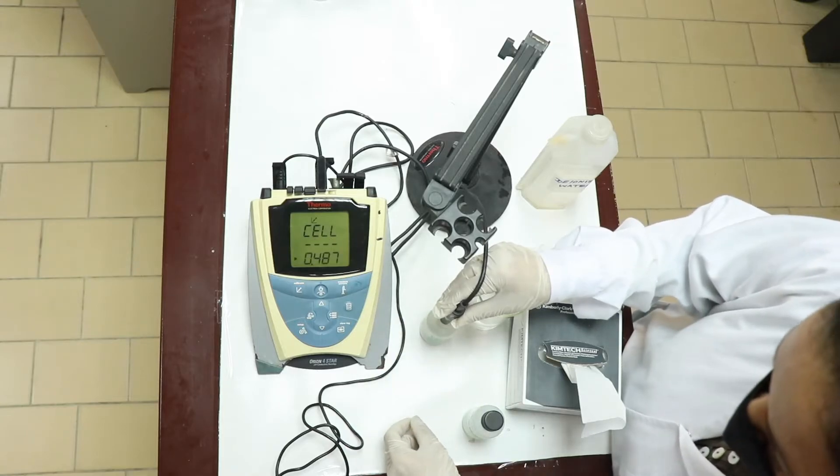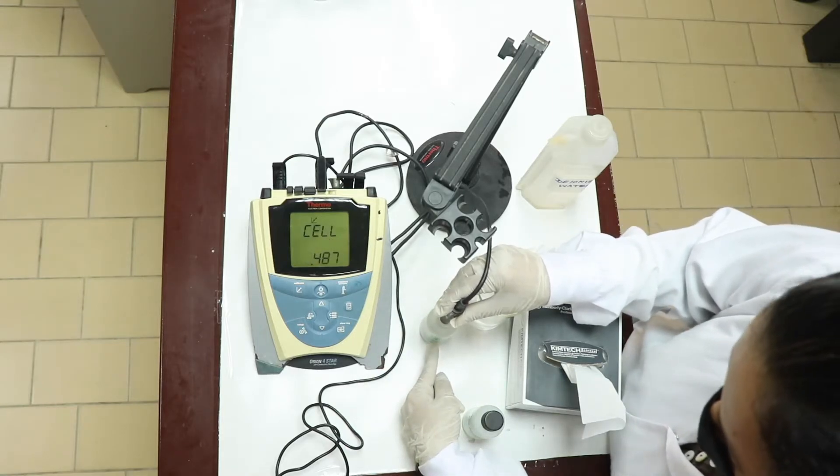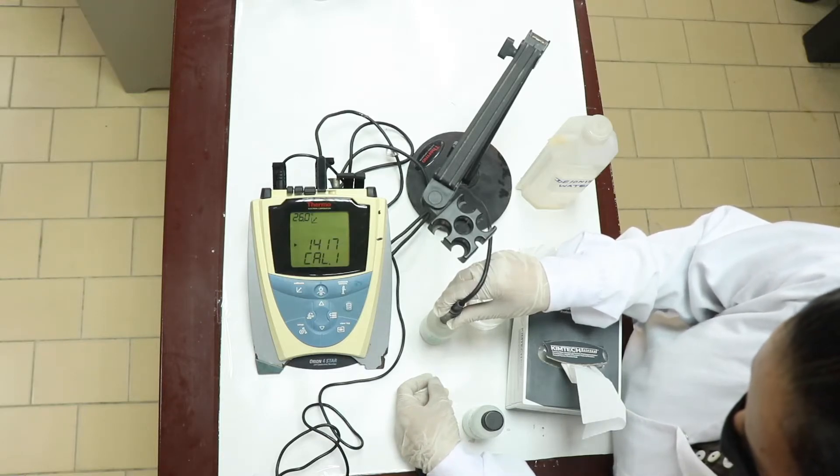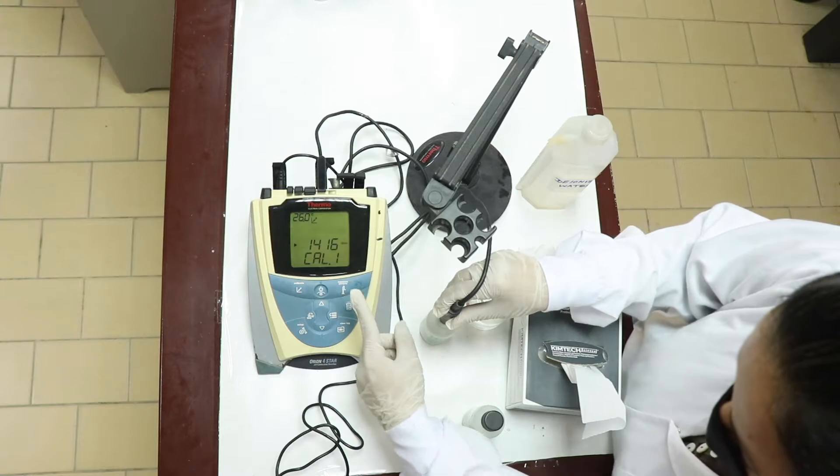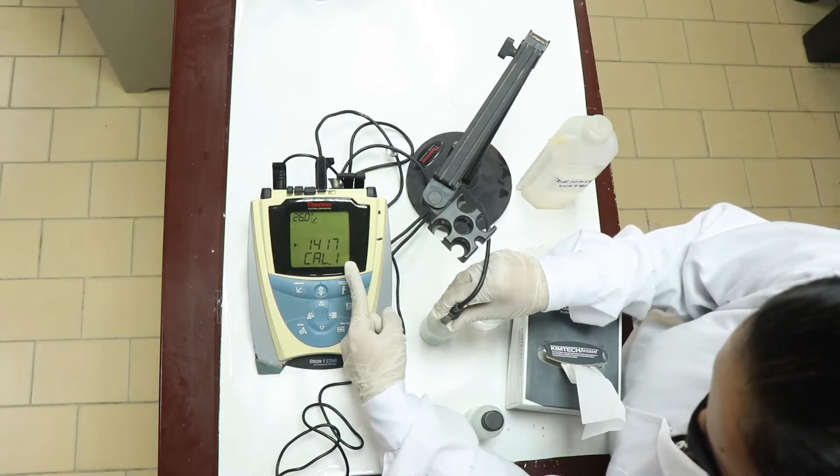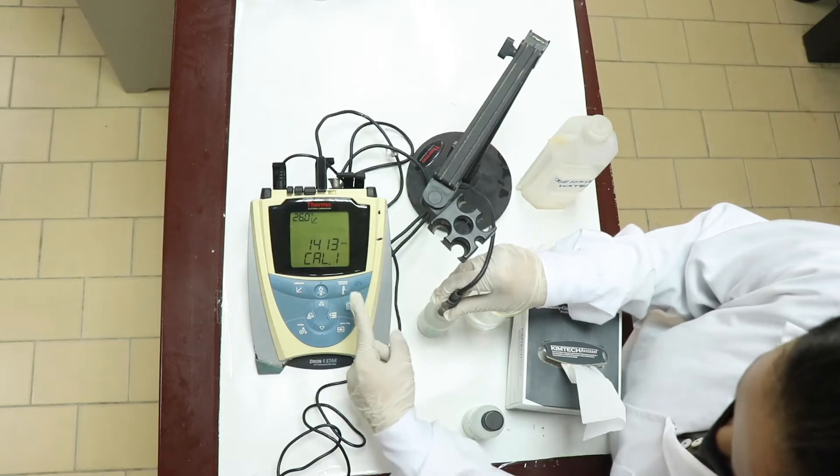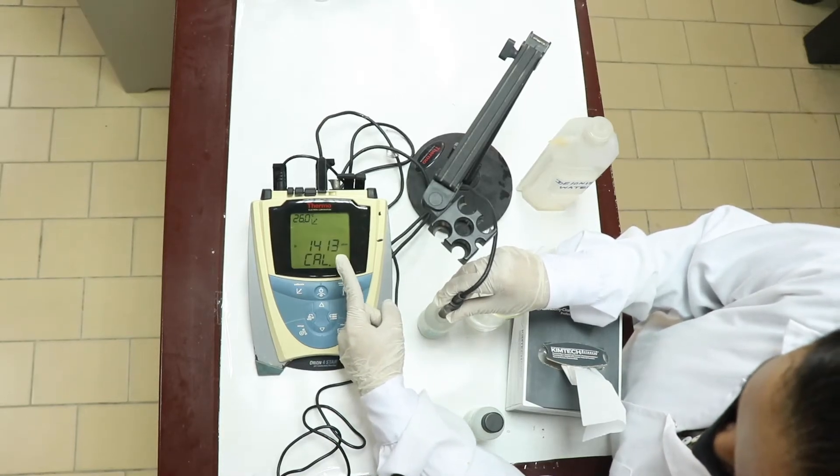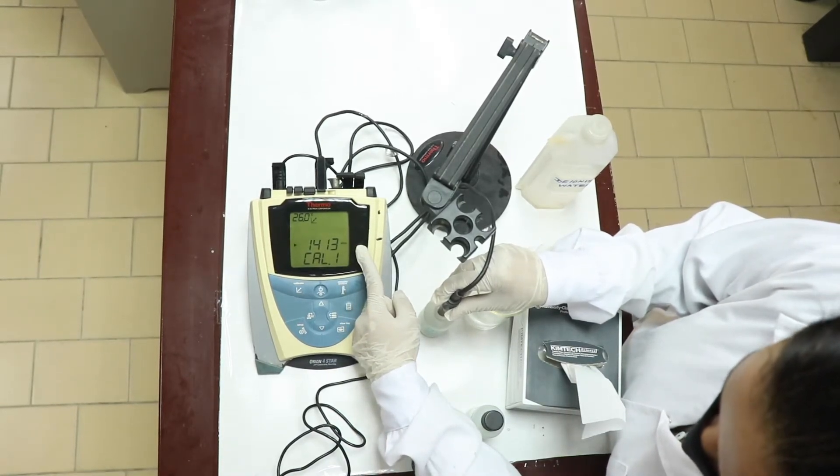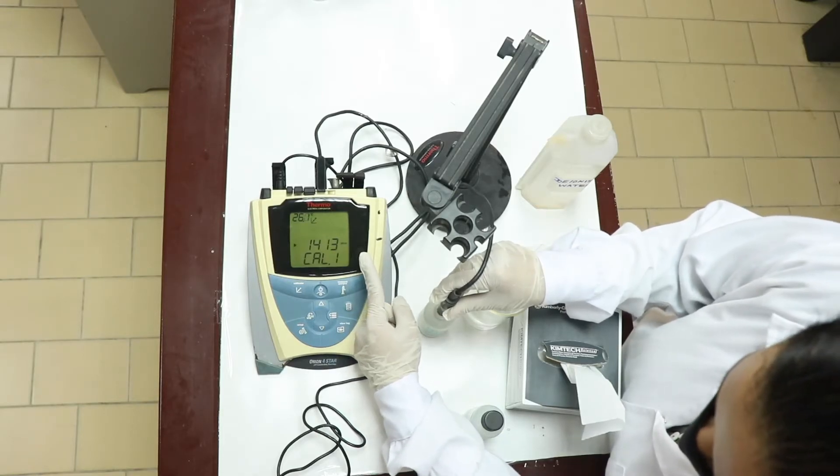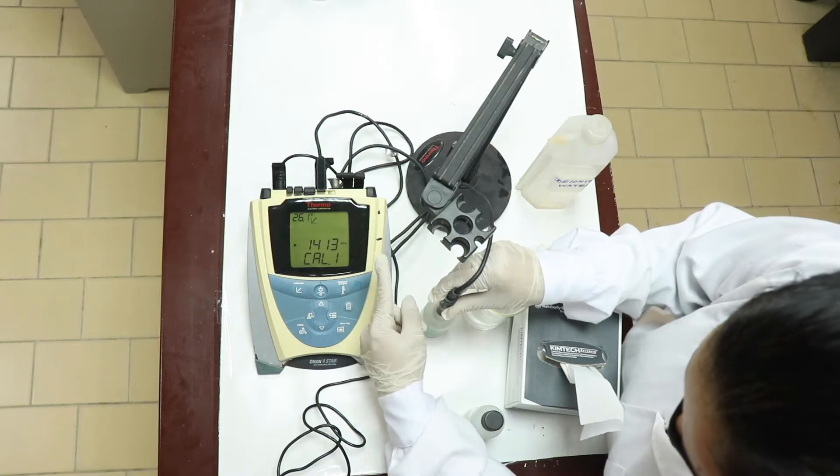The machine is now trying to read this value. You have to wait until this value appears on the screen. You can see the number 1416 has come. It is now fluctuating. You can see now it is 1413 and the unit is stagnant. The unit is not fluctuating. That means the calibration process is complete now for the first solution.